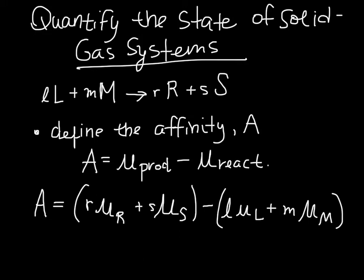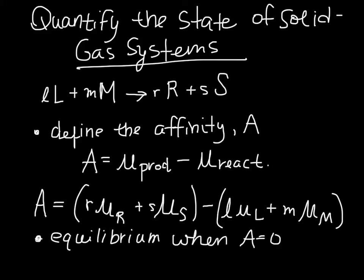The case of equilibrium is when A is equal to zero. According to our definition, that means equilibrium is when the chemical potential of the products is equal to the chemical potential of the reactants. We have to keep in mind, we don't actually know the chemical potentials directly — we don't measure that.